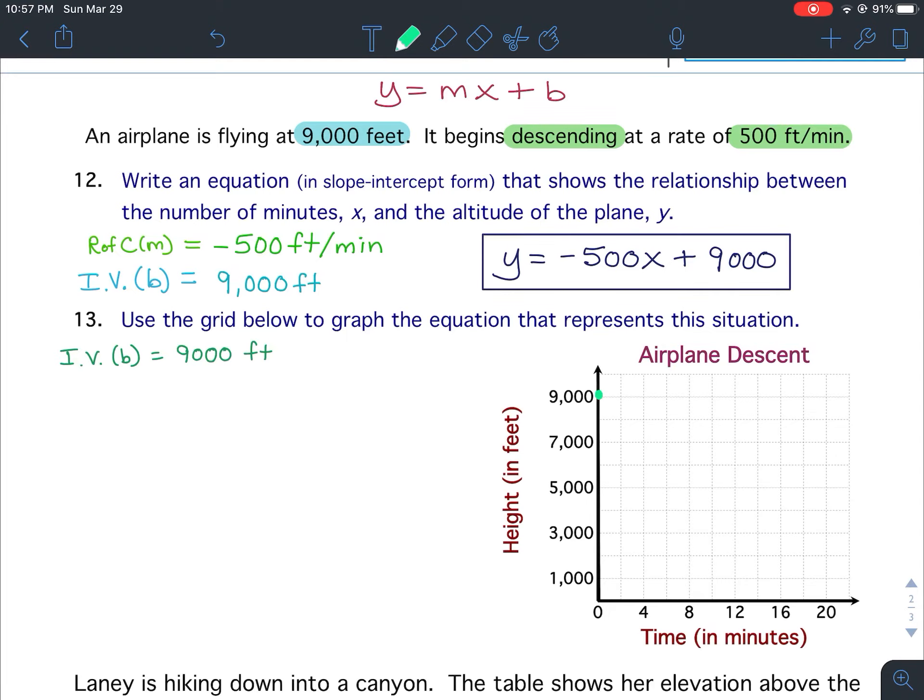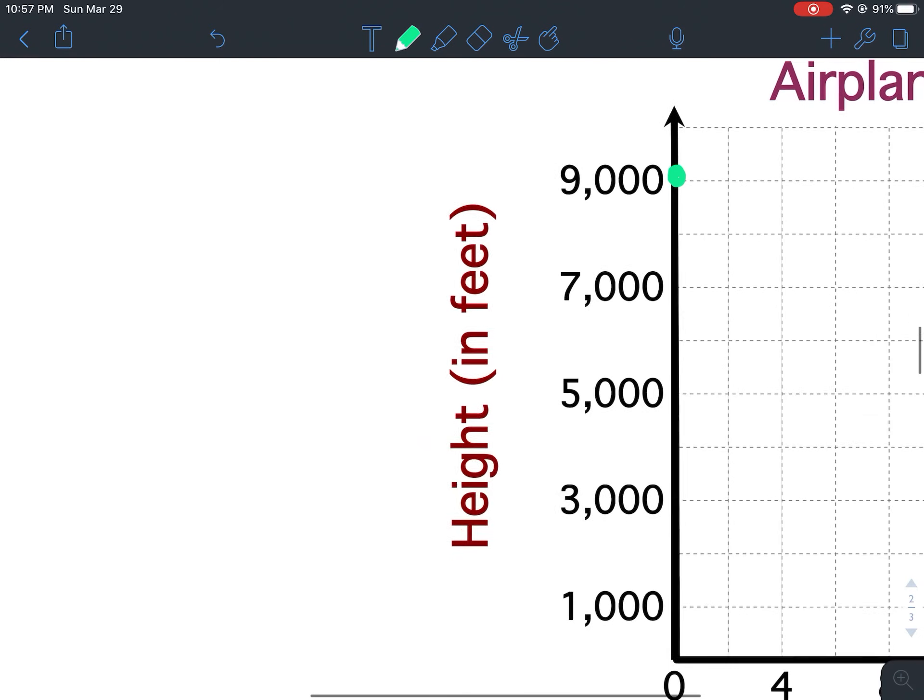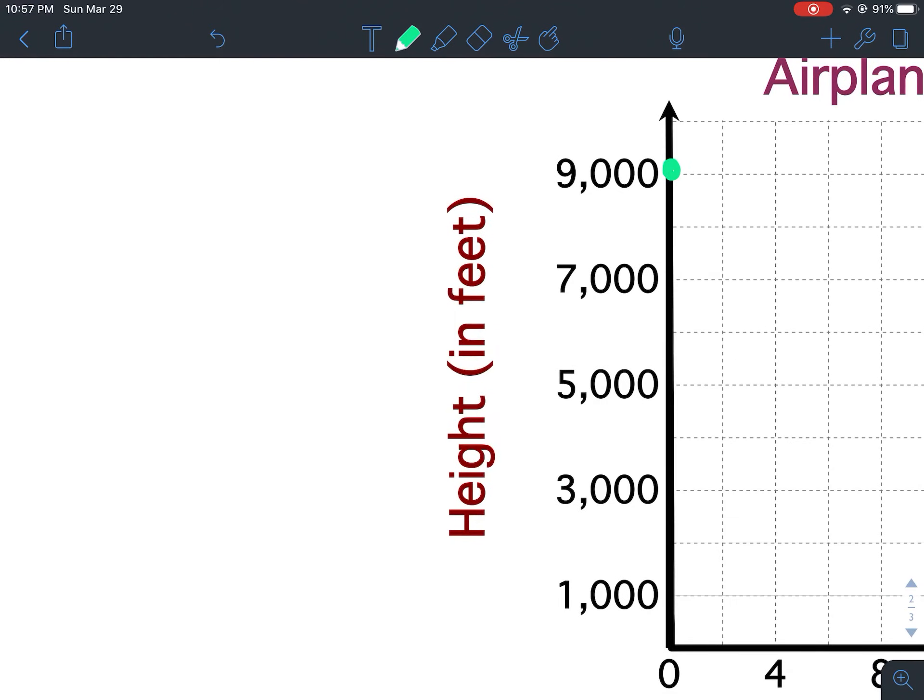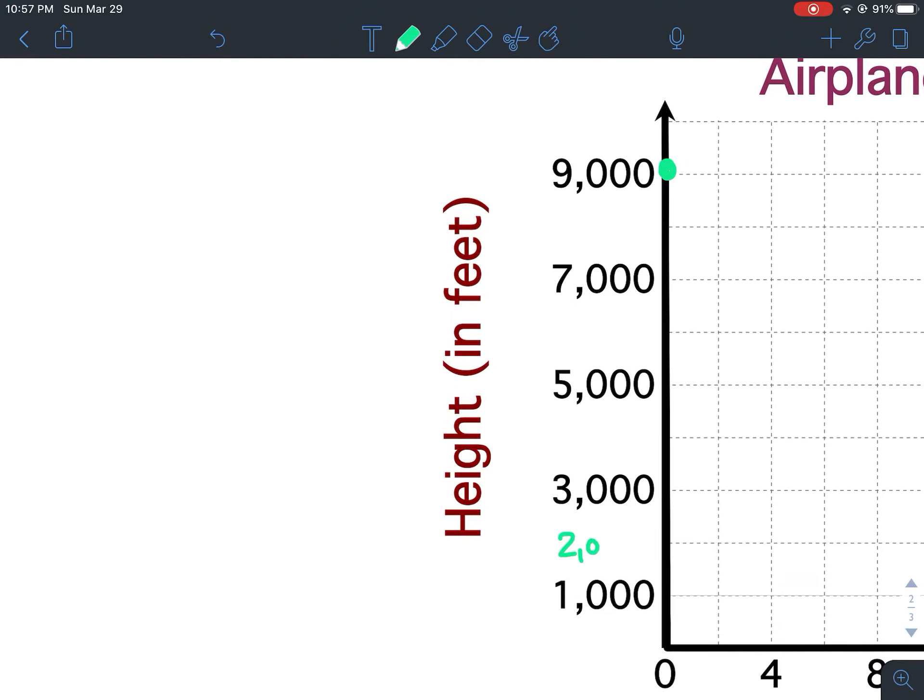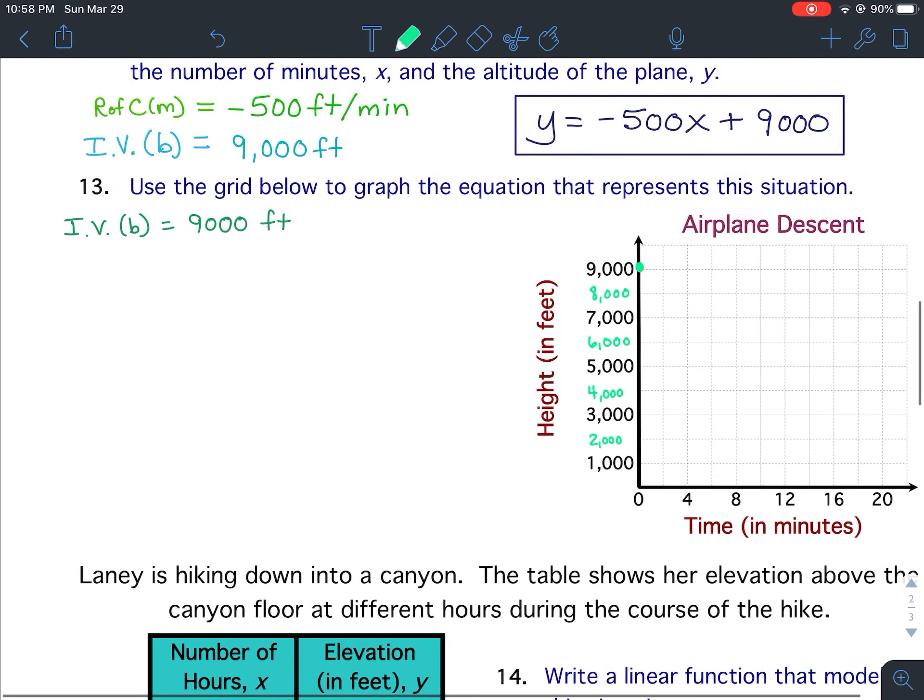Now our rate of change is negative 500. But if you look at this, it's actually going down by thousands. So 1,000, this would be 2,000, this would be 4,000, 6,000, and 8,000. So yes, we could figure out what it would be using this grid. We could go down 500 and over 1 and so forth. But we're actually going to do something a little easier.